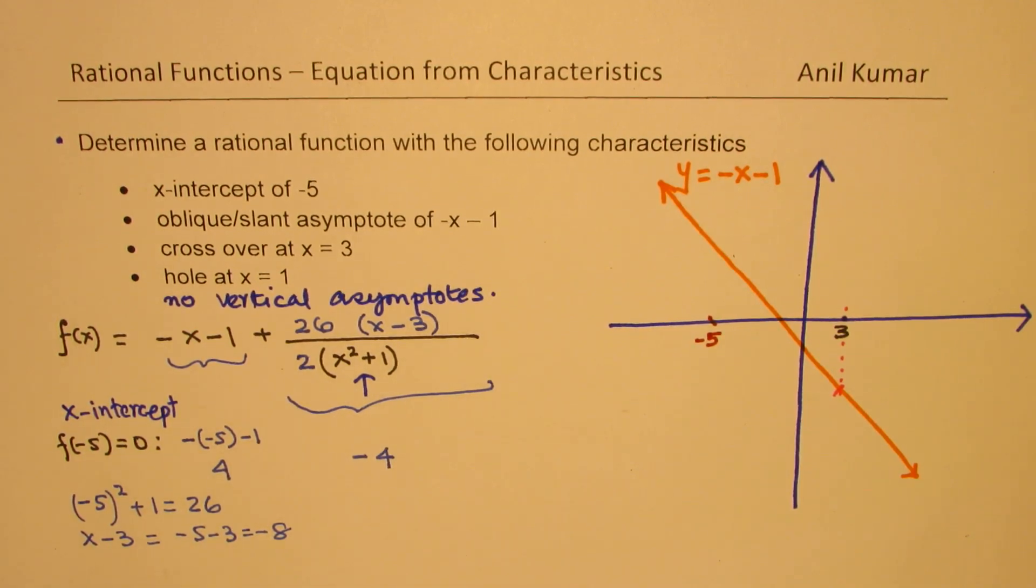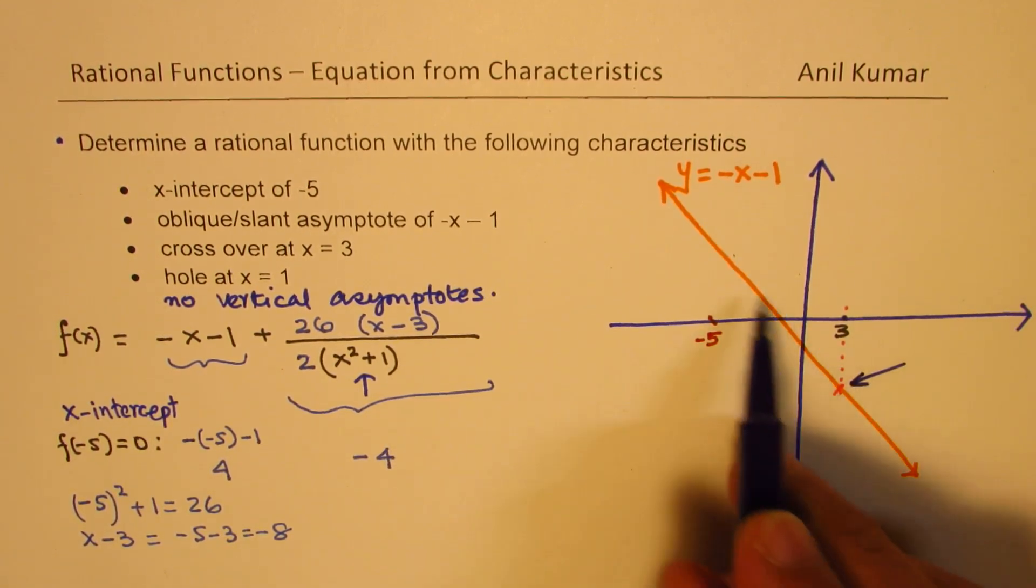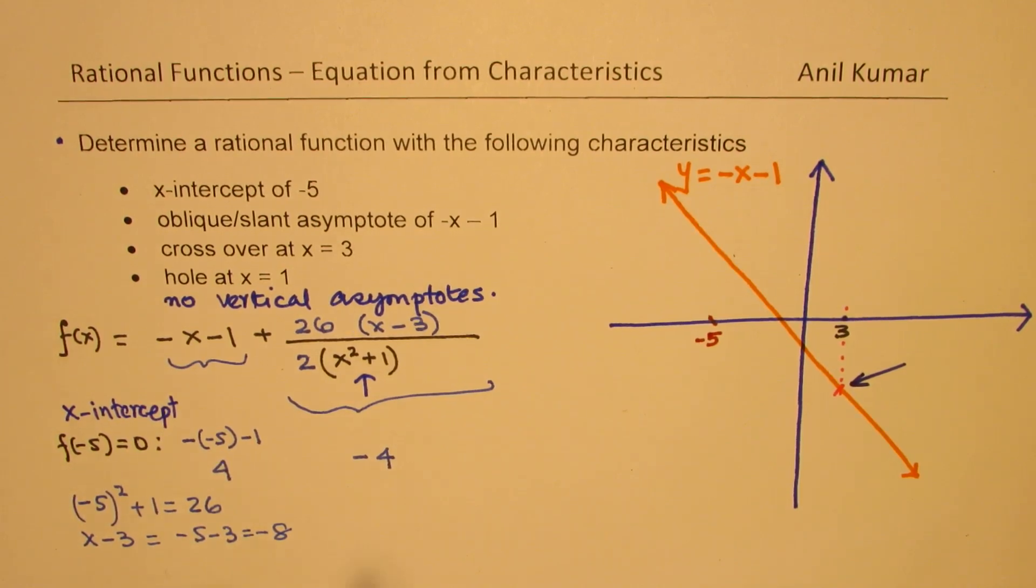Now, the idea is that we have to get this value somehow. What should be this value where the graph crosses the oblique asymptote?